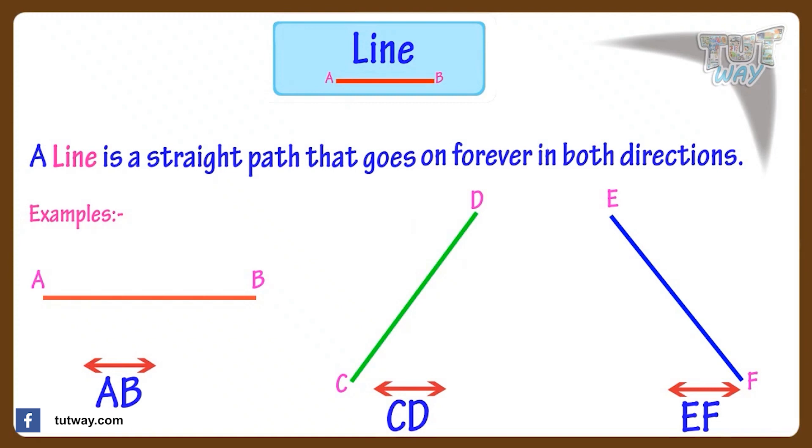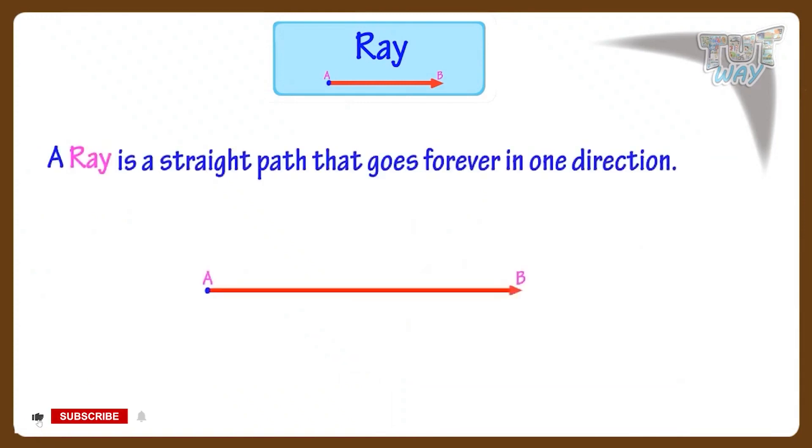Now, let's see what is a ray. A ray is a straight path that goes forever in one direction. That is ray AB. There is an end point on one side and on one side there is an arrow showing it goes forever in this direction.